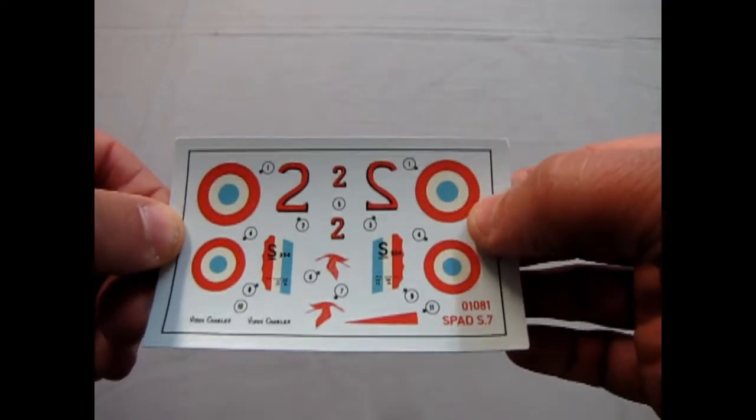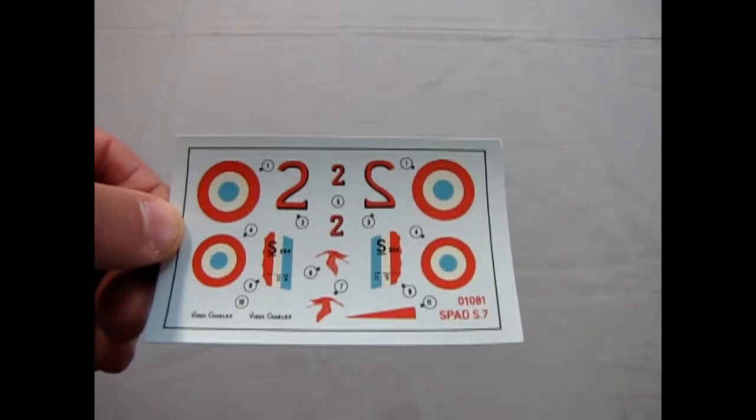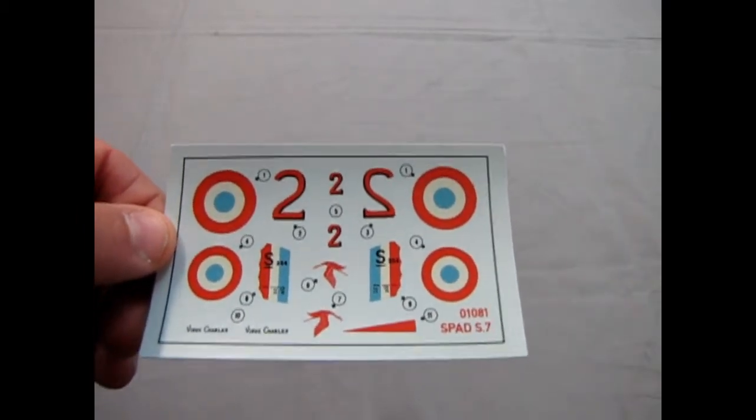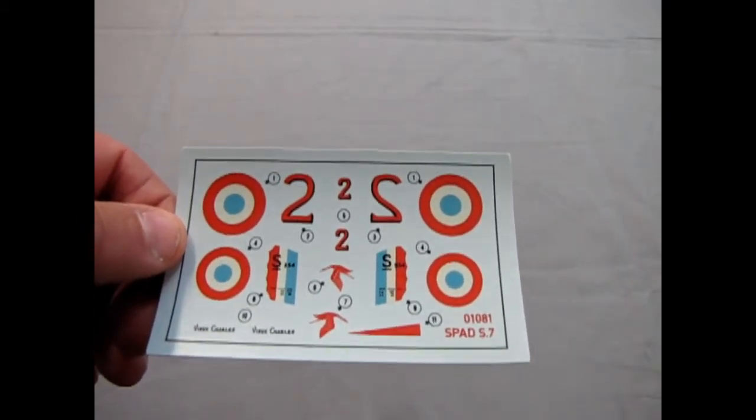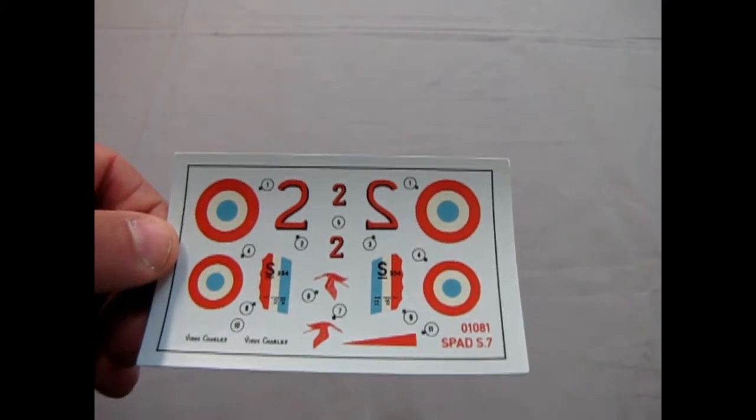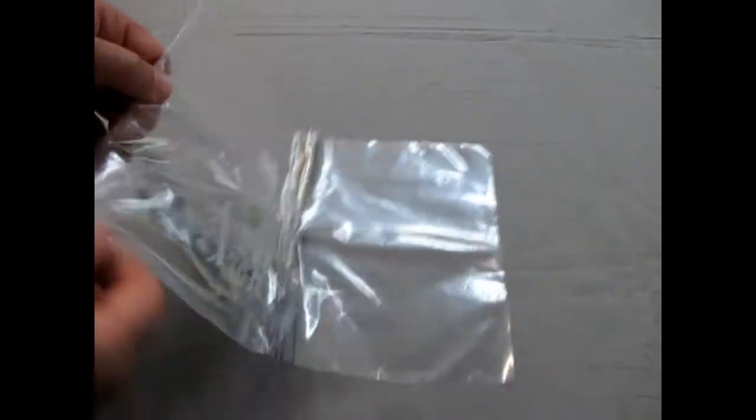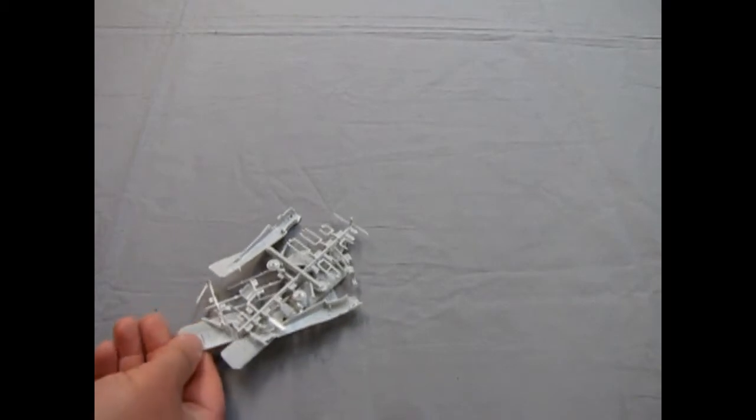France had the red on the outside, white in the middle, and the blue dot in the center for theirs. Whereas Britain is red in the center, white in the middle, and blue on the outer edge. You only get one way to build this, which is as the old guy version.